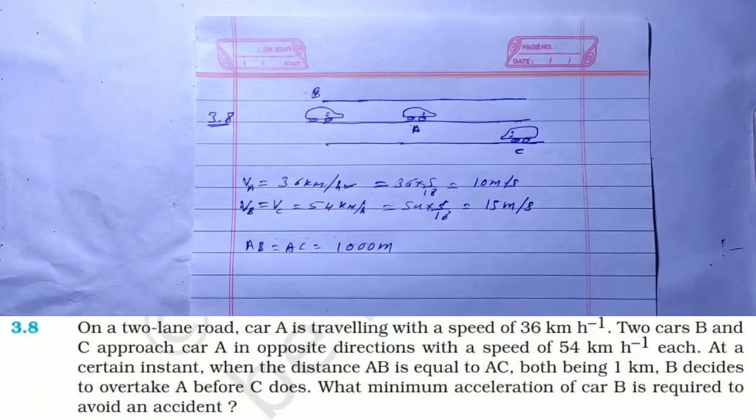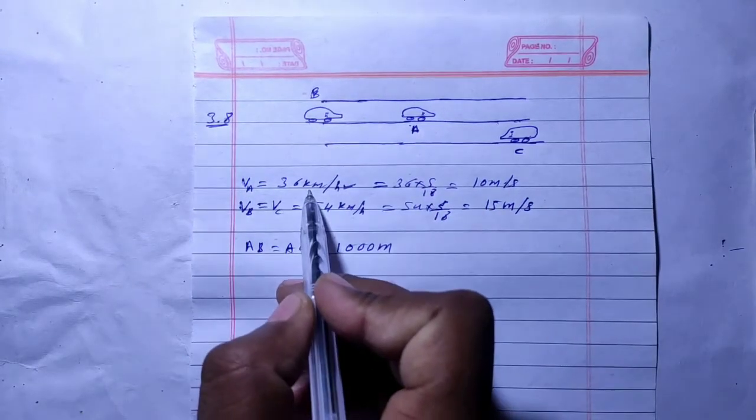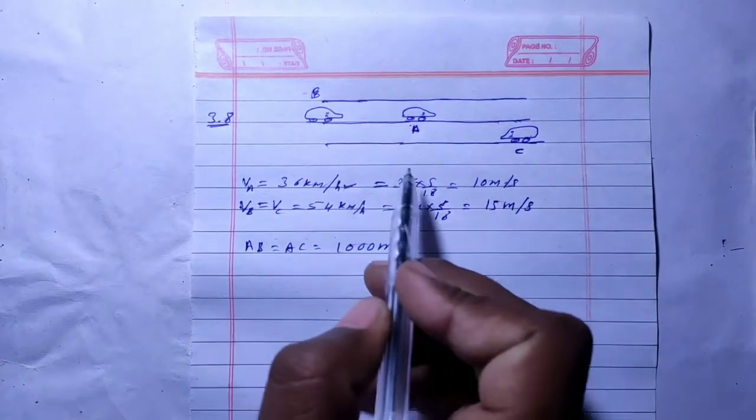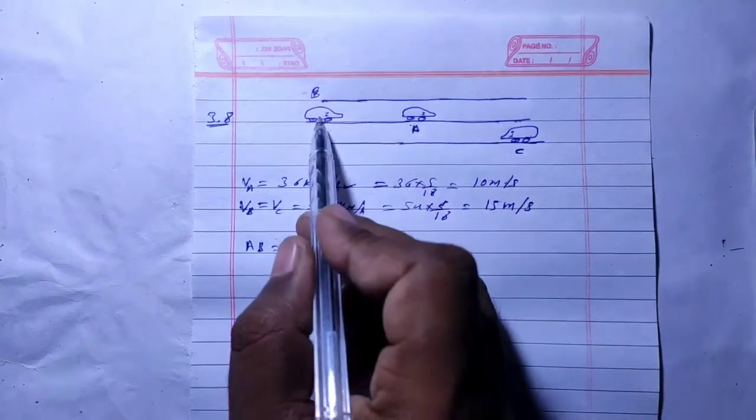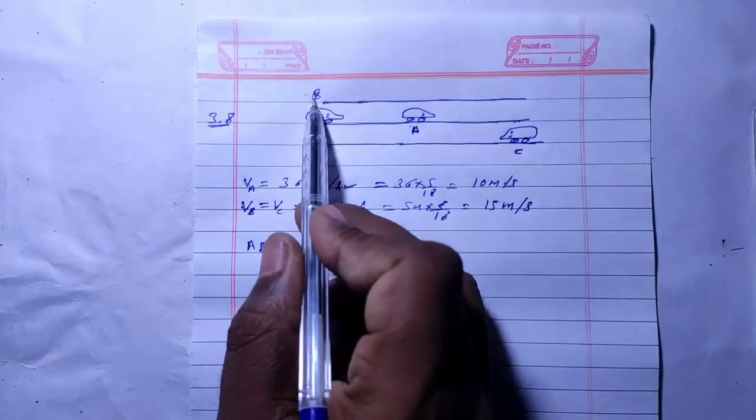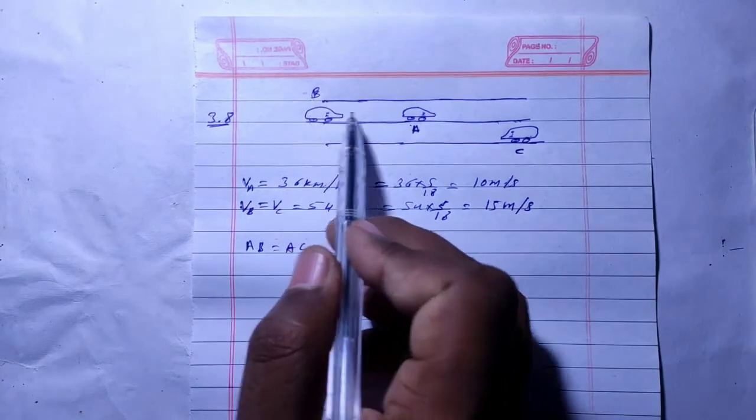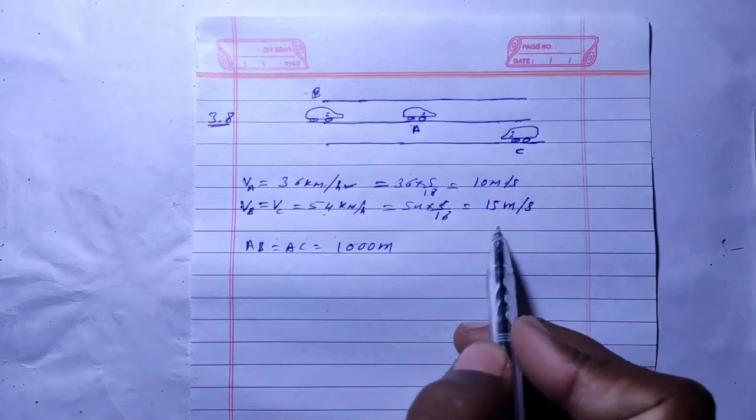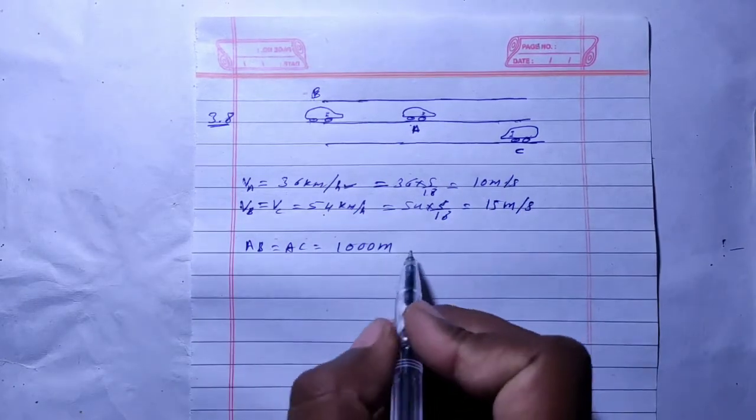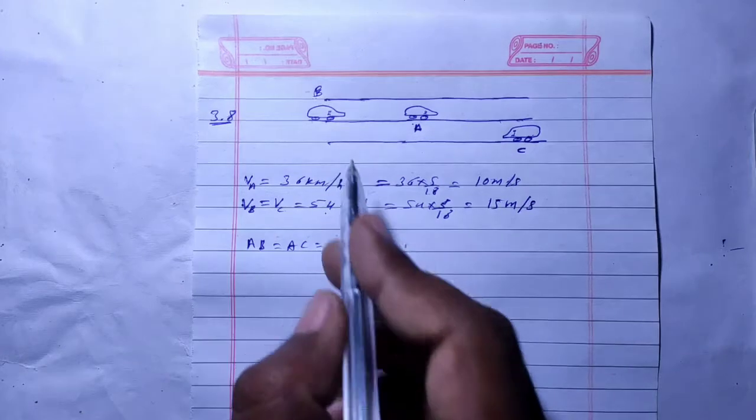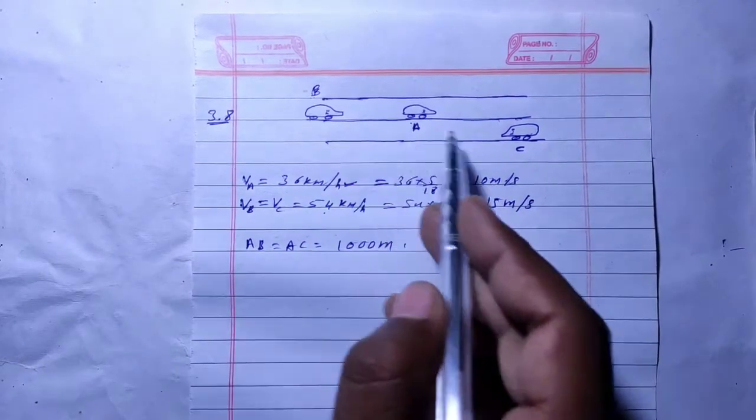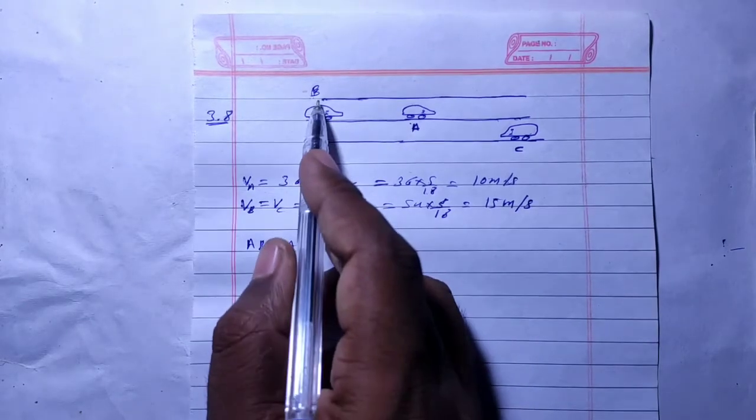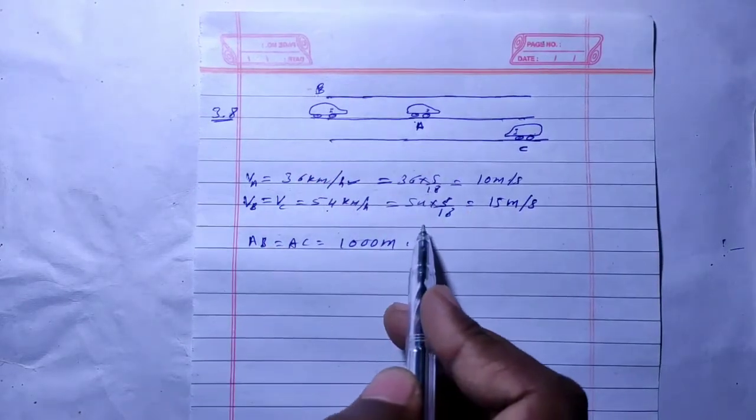Okay, so car A here has a speed of 36 km per hour. Converting to meters per second, multiply by 5/18, we get 10 meters per second. Cars B and C are in opposite directions and both have a speed of 54 km per hour. B is here and wants to overtake A. The speed of B or C is 54 km per hour. Converting to meters per second, we get 15 meters per second. AB and AC are both 1000 meters at this instant. B decides to overtake A before C arrives, and we need to avoid an accident.